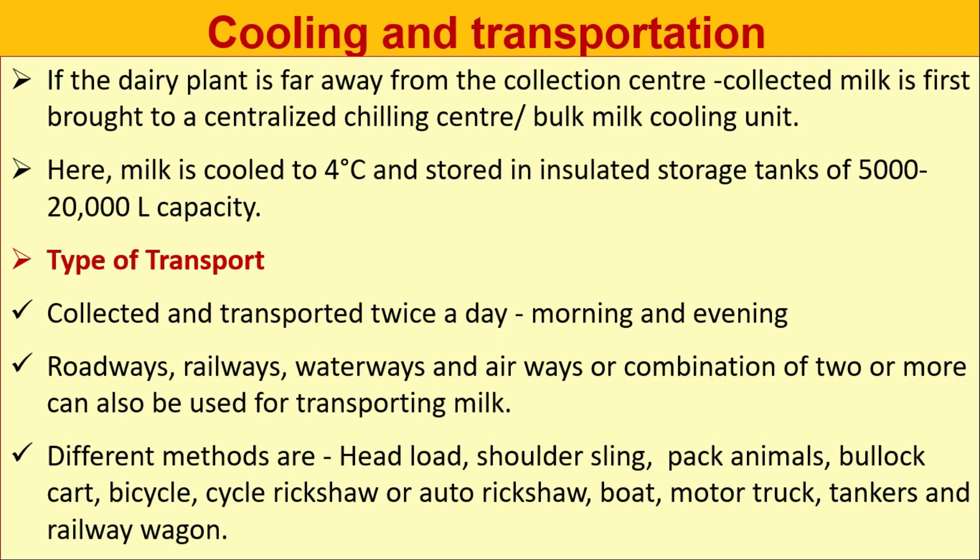If the dairy plant is far away from the collection center, the collected milk is first brought to a centralized chilling center or bulk milk cooling unit. Here milk is cooled to 4°C and stored in insulated storage tanks of 5,000 to 20,000 liter capacity. Milk is collected and transported twice a day — morning and evening.